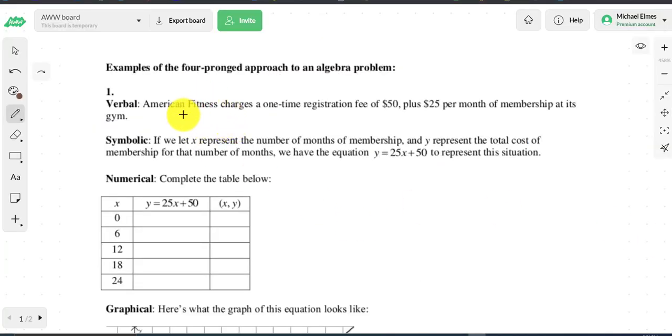So looks like we have a problem here. It says American Fitness charges a one-time registration fee of $50 plus $25 per month. So if you join like Workout World or Retro Fitness or Gold's Gym, usually there's like an initiation fee and then you pay a monthly fee. So here we have a $50 fee plus $25 every month. That's a verbal description of the problem.